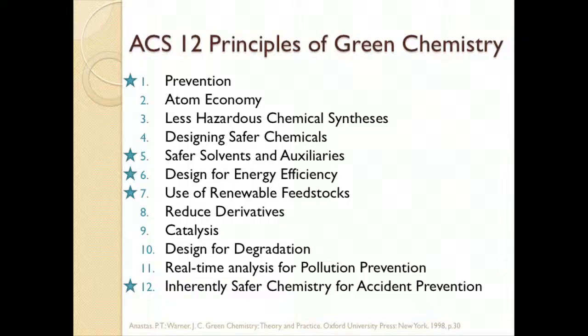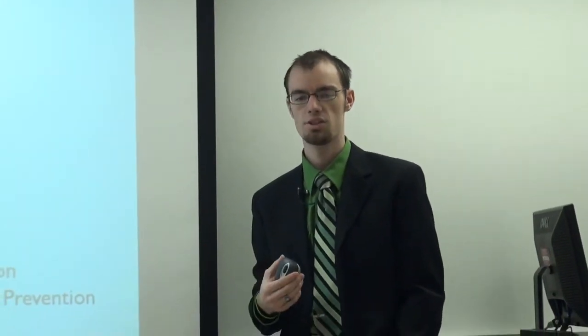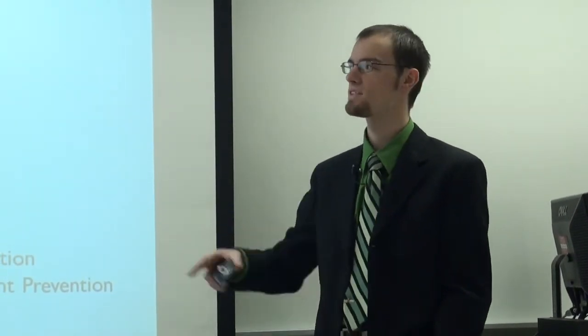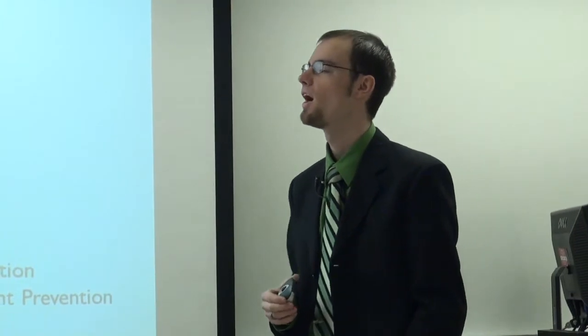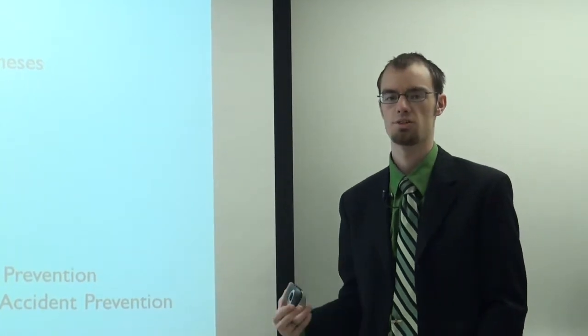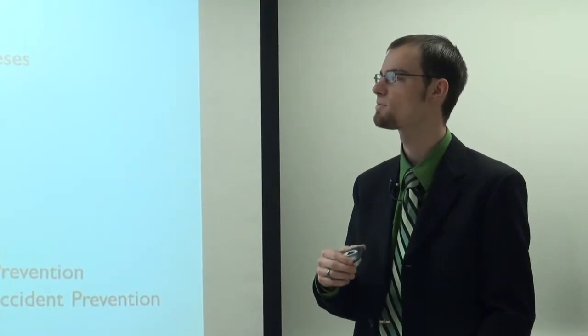So the ACS, the American Chemical Society, has 12 principles for green chemistry. I've put stars next to the five that are the most prevalent for using supercritical fluids. The first of which is prevention. What they're talking about is rather than having a ton of solvent usage and then having to clean it up, you just prevent how much you use in the first place. That's the number one category. They also talk about atom economy. You want to don't create a bunch of extra reagents, extra products. Just try to find the most concise synthesis possible.